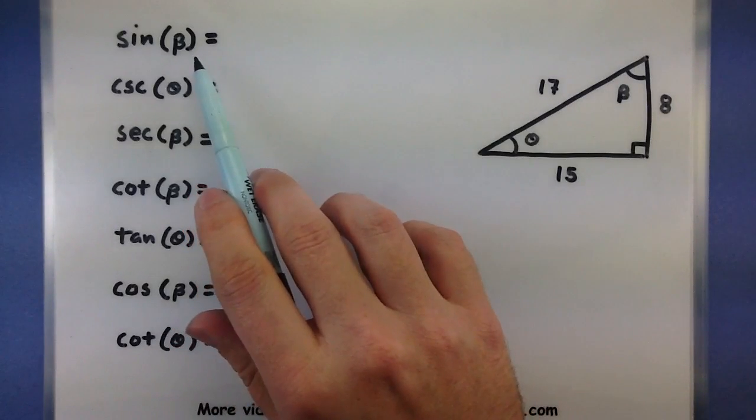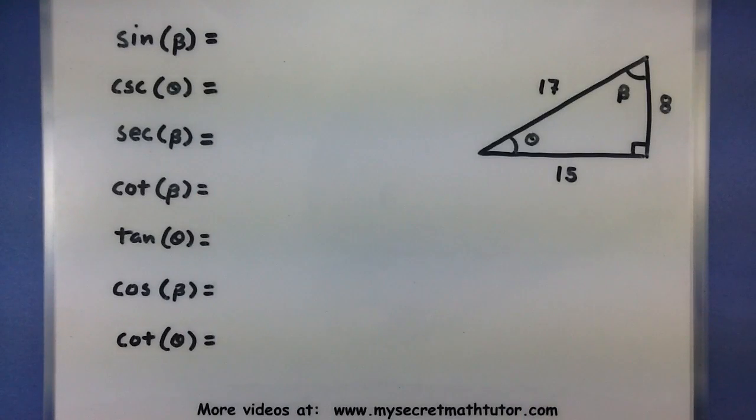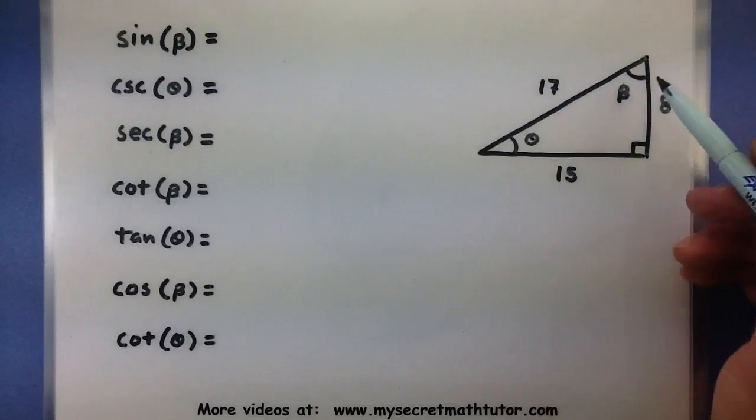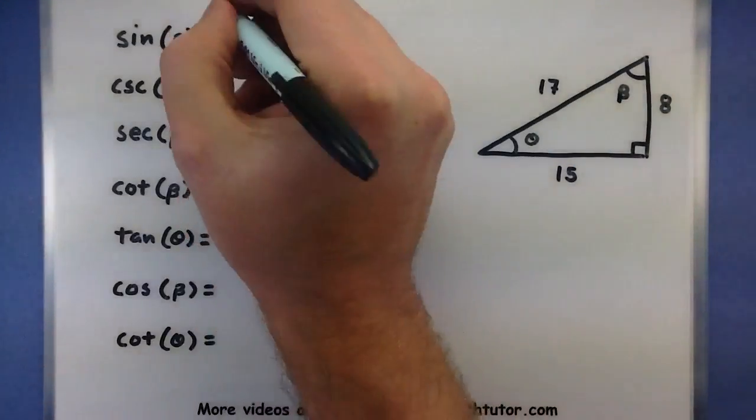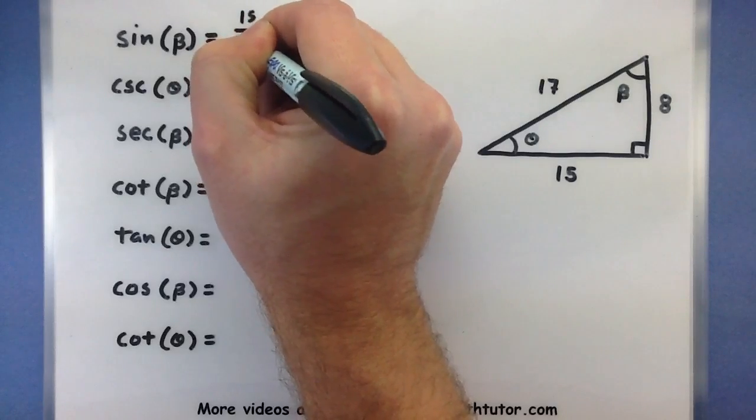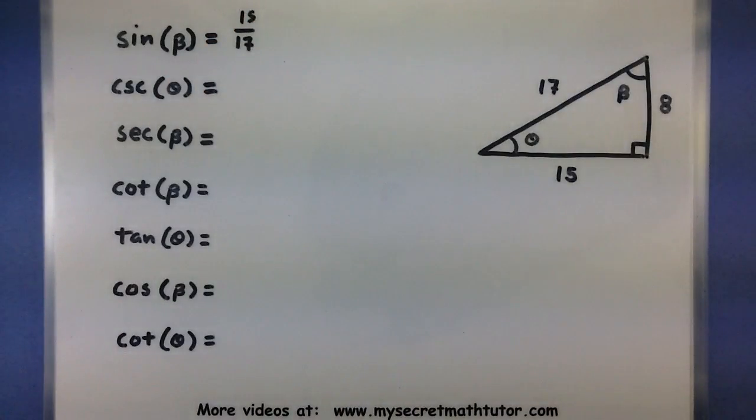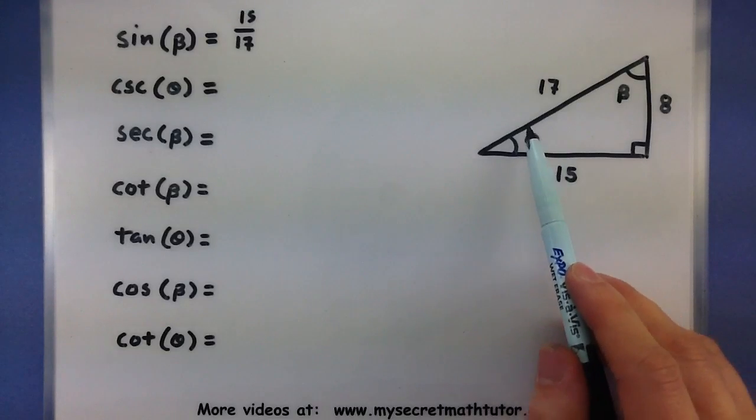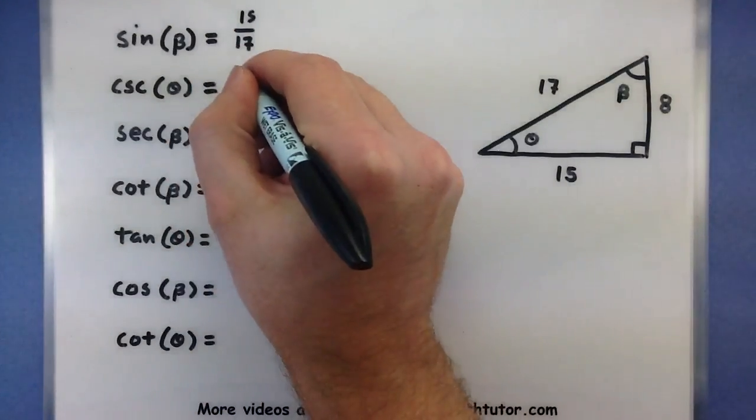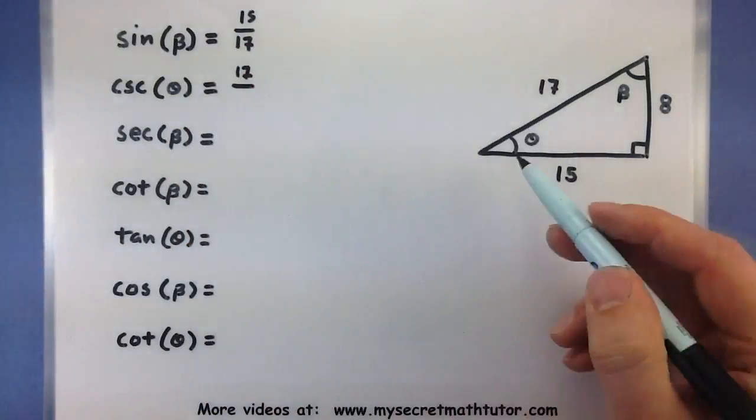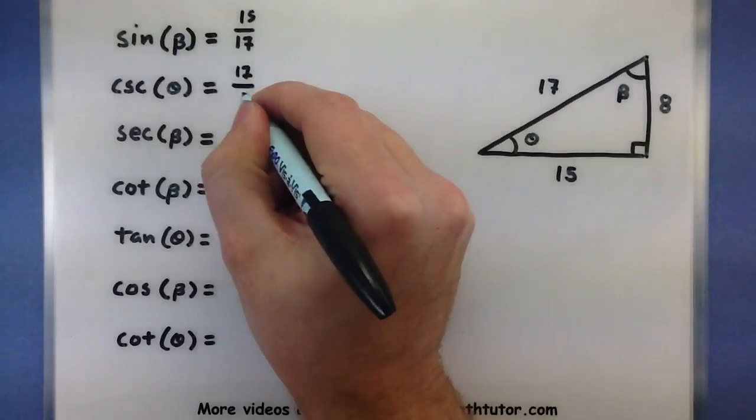So this one wants the sine of beta. I know that sine is opposite over hypotenuse. So I'm looking at my beta, opposite would be the 15, hypotenuse is 17, so 15 over 17, done. Alright, a new trig function, cosecant of theta. Well, cosecant is the hypotenuse over the opposite, so 17, that's my hypotenuse, opposite is 8, done.